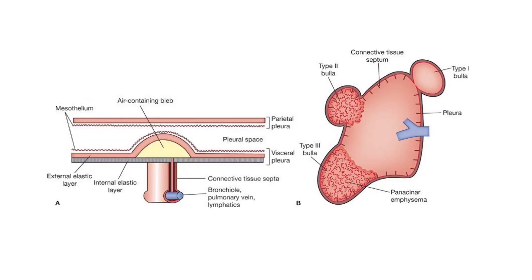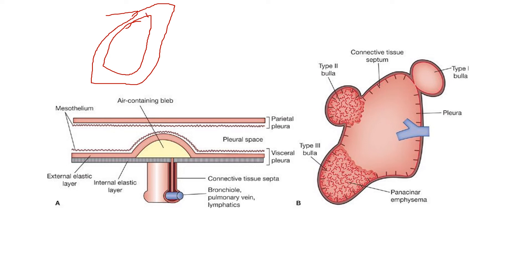Here we can see that the lung is covered by parietal pleura and visceral pleura. The visceral pleura is internally divided into an external elastic layer and an internal elastic layer. The air between these two spaces is known as a bleb. The air which is deep to the internal elastic lamina and confined within the connective tissue septa is where bullae occur. Bullae can be classified into type 1, type 2, and type 3. Type 3 is associated with panacinar emphysema. Type 1 has a neck with an empty interior, and there are more blood vessels in type 2 and type 3.